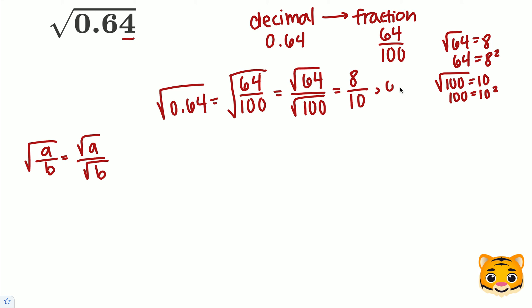8 over 10 as a decimal is 0.8. However, we can reduce this fraction by dividing both our numerator and our denominator by 2.